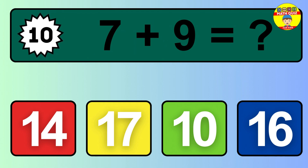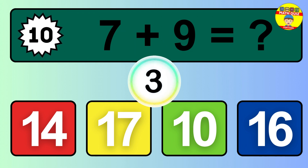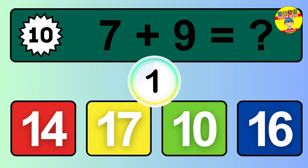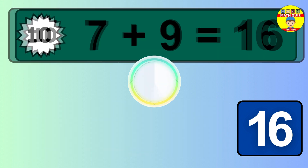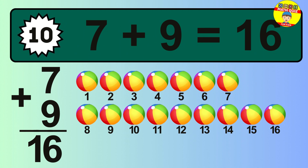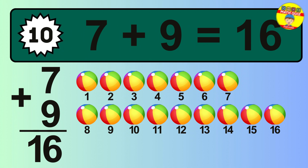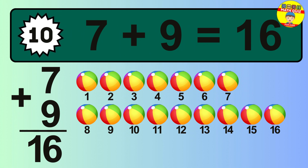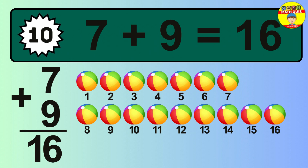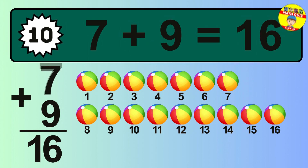Question 10. 7 plus 9 equals what? Let's count it: 1, 2, 3, 4, 5, 6, 7, 8, 9, 10, 11, 12, 13, 14, 15, 16. So the answer is 7 plus 9 is 16.